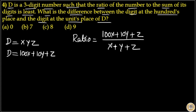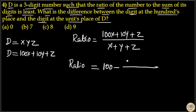This ratio must be least. I will rewrite this ratio as 100 minus a remaining term. To find the remaining term, I will write the denominator first, that is X plus Y plus Z. Now, 100 times this denominator gives 100X plus 100Y plus 100Z. In the numerator, we have 100X plus 10Y plus Z.